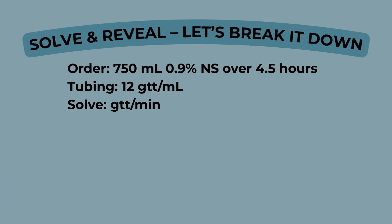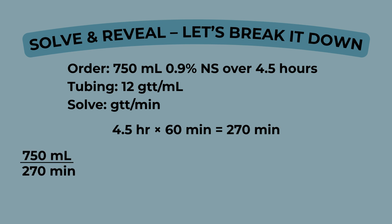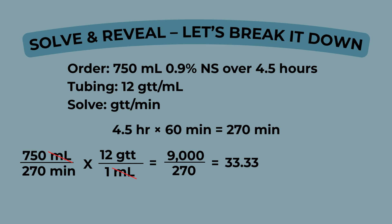Did you get it right? Let's break it down and see. Step one, convert the time: 4.5 hours times 60 minutes equals 270 minutes. Step two, start with what you're giving: 750 milliliters over 270 minutes. Step three, add your drop factor: 12 drops over one milliliter. Cancel out the milliliters and we're solving for drops per minute. Multiply across the top, multiply across the bottom, then divide. 9,000 divided by 270 equals 33.33. Round to the nearest whole number — 33 drops per minute is your final answer.